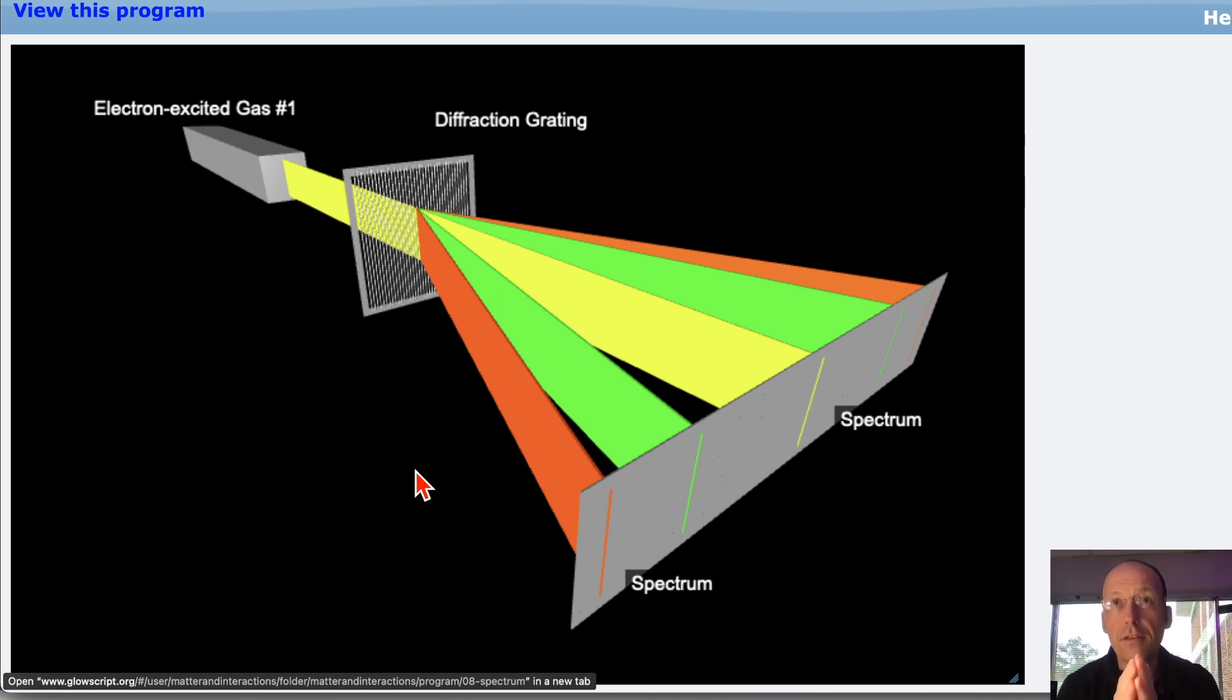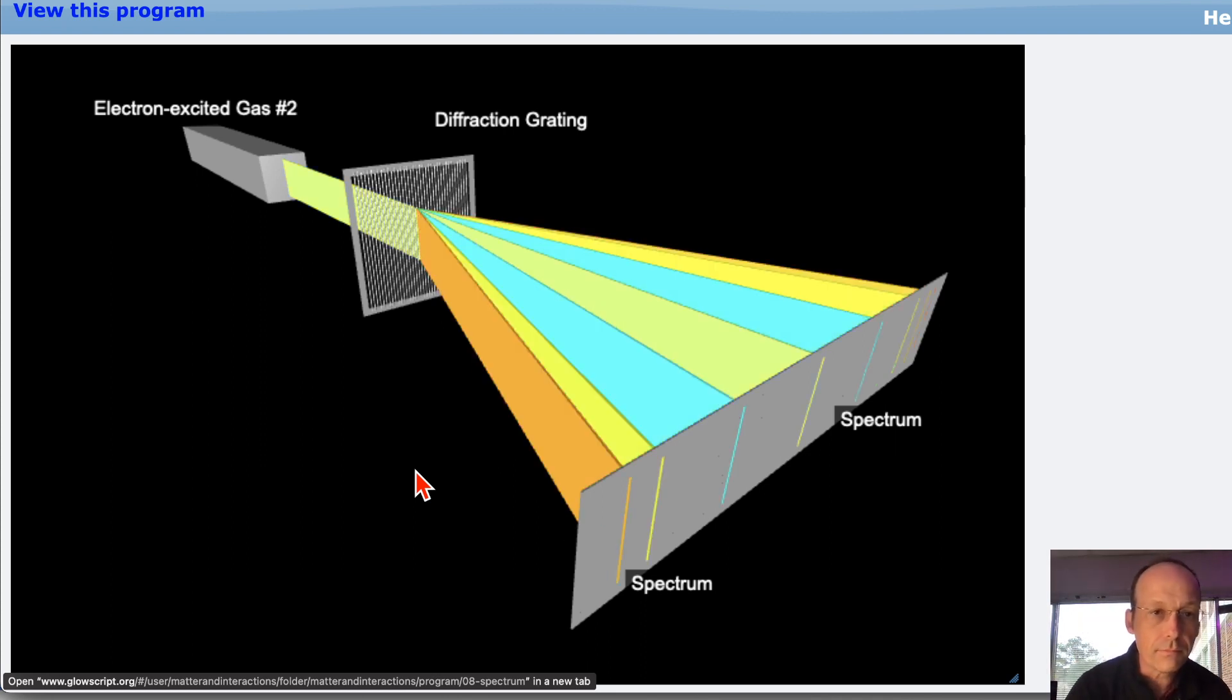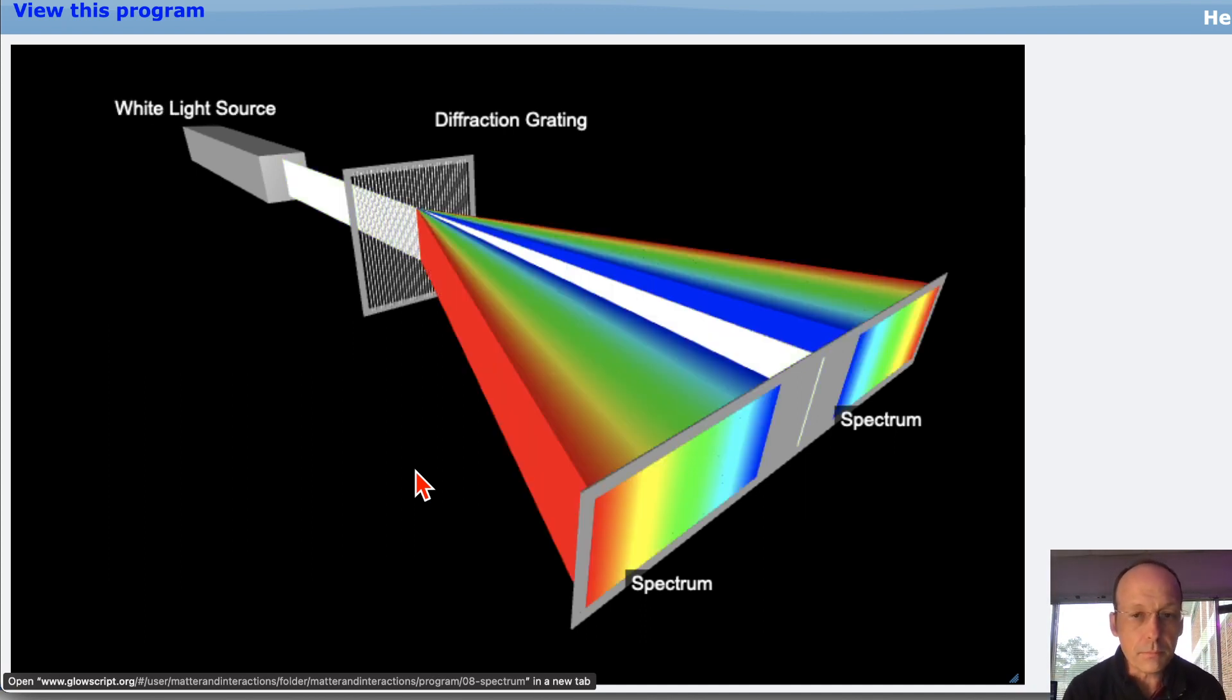Those colors depend on that gas. So that gas has a unique set of colors that it produces. If I use another gas, I get different colors because it has different energy levels. Remember, each one of those colors corresponds to an energy level change. Now, you may have energy level changes that are not in the visible spectrum, and that's fine.